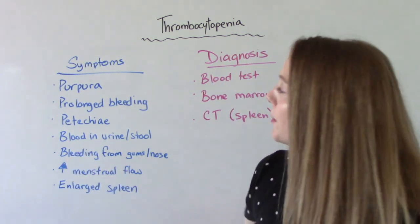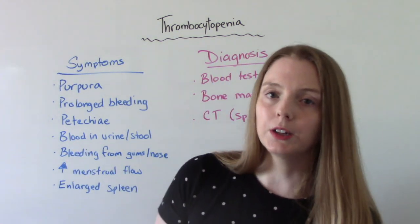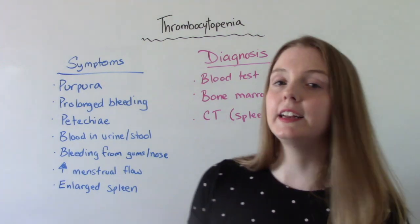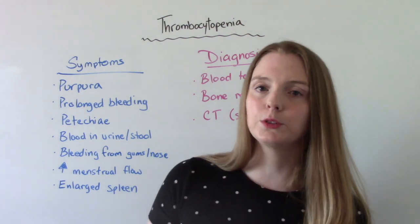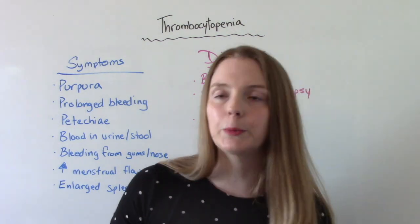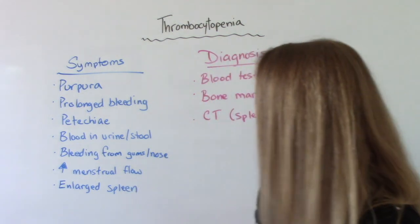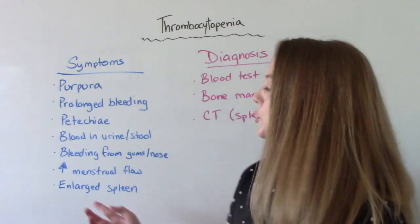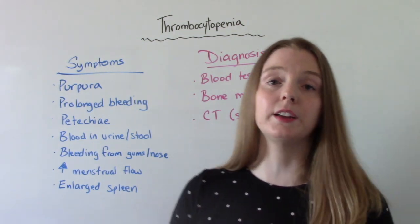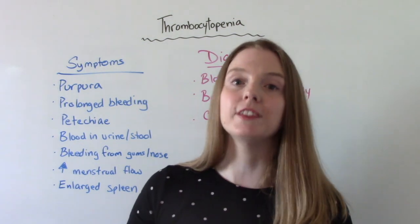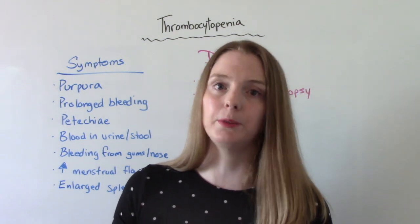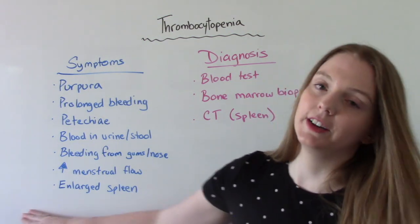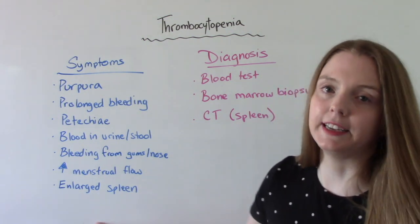There might be blood in the urine or stool. The patient might be bleeding from their gums or their nose frequently. If they are a person who menstruates, their menstrual flow could be increased — heavy bleeding on the period. And then they could also have an enlarged spleen.